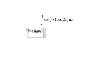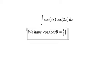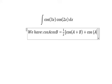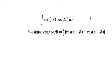We have cos A multiplied with cos B equals 1 over 2 times cos(A plus B) plus cos(A minus B). So we will apply this formula for this situation.